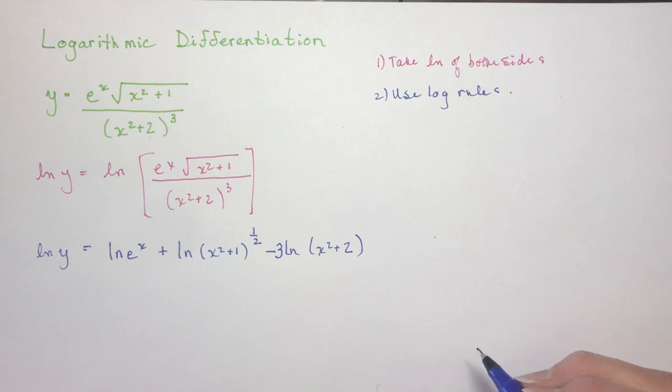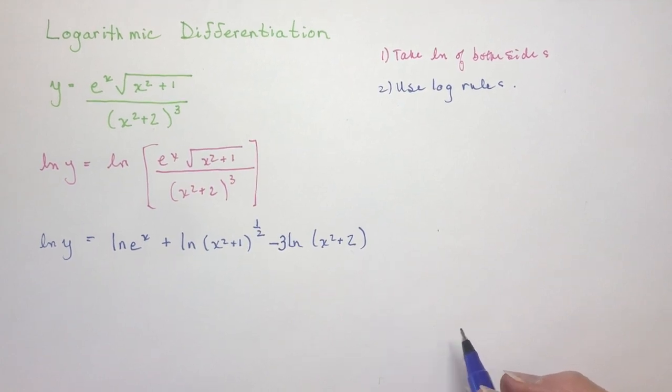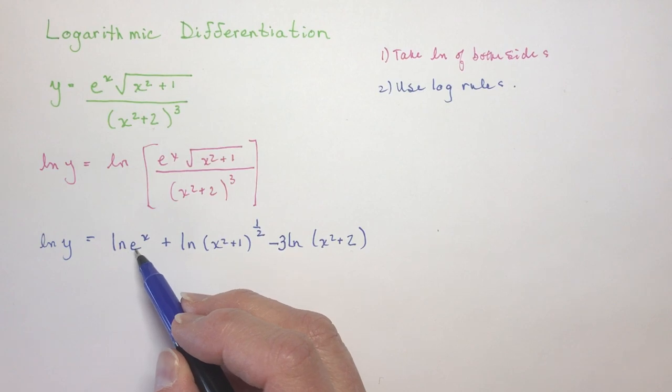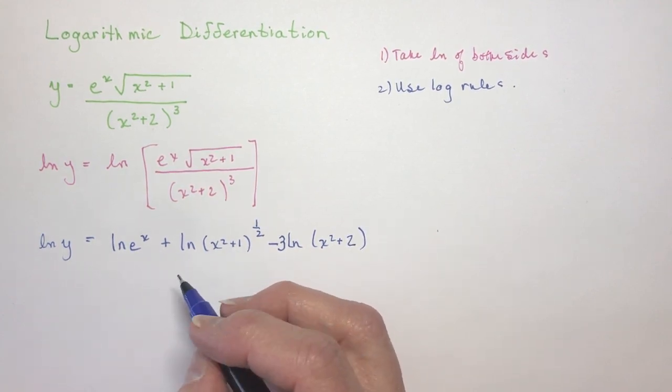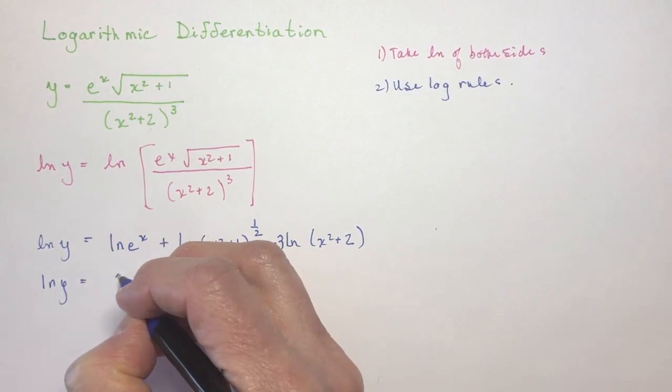So now we're ready to take the derivative. Maybe one more step that you might even see you can do before you start this. And that is the ln of e to the x. What is the ln of e to the x? So that says, what do I raise e to to get e to the x? And the answer is just x. So you can replace that. Let's do that first. So we're going to just call this x.